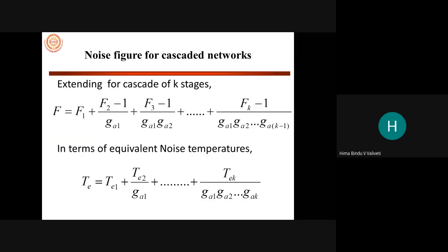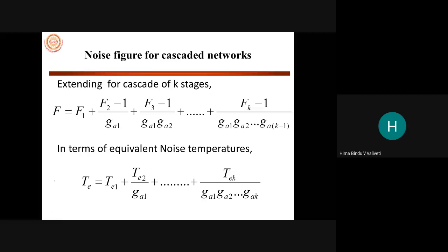If you want to extend this to K stages, it continues as F1 + (F2 − 1)/GA1 + (F3 − 1)/(GA1 × GA2) and so on. This is the extension for cascaded K networks. Likewise, equivalent noise temperatures can be found using the same approach, since we already have effective noise temperature in terms of noise figure.